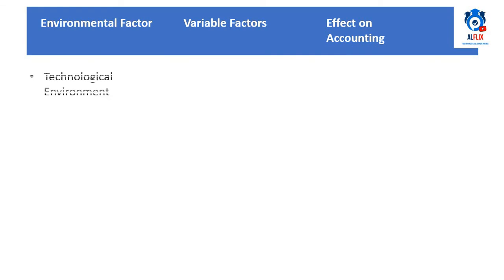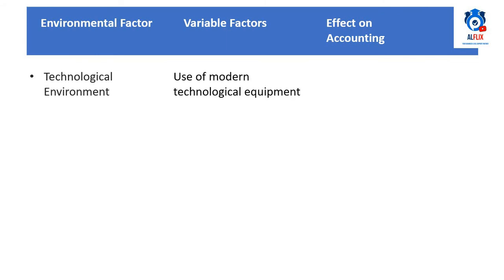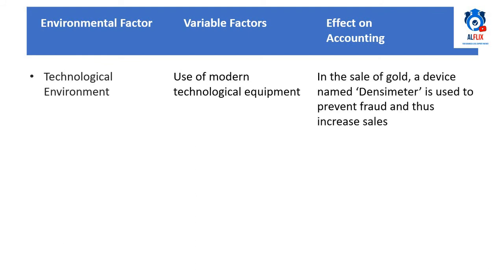Technological environment is the use of various technical equipment to assist the accounting process. An example of a variable factor is the use of modern technological equipment. In the sale of gold, a device named densimeter is used to prevent fraud and thus increase sales.